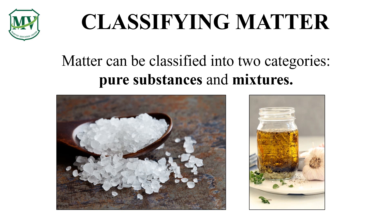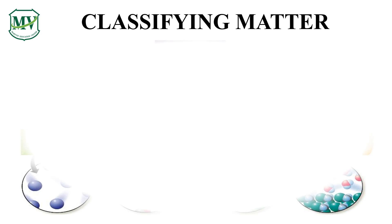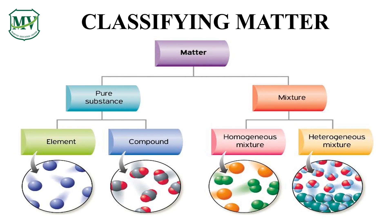Look at the two pictures. Which is a pure substance? Which one is a mixture? Let's find out. Matter can be a pure substance or a mixture. A pure substance can be an element or compound. A mixture can be homogeneous or heterogeneous. So, how are they different from each other?